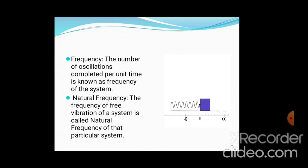The third basic concept is frequency. It is the number of oscillations per unit time — that is known as frequency. One more term is natural frequency. The frequency of free vibrations is known as natural frequency. Free vibrations are vibrations which occur without applying any external forces, and whatever frequency occurs during these free vibrations is known as natural frequency.